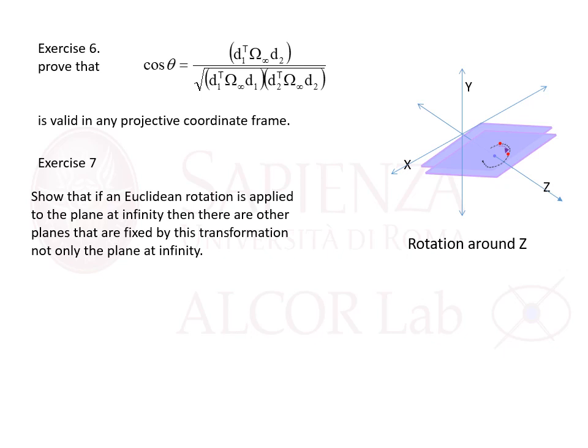To conclude: we have proved that the equation for the absolute conic is valid in any projective coordinate frame — that is, also in a projective space and in an affine space — and we have seen that it is true in the Euclidean frame. As exercise 7, you should show that if a Euclidean rotation is applied to the plane at infinity, for example a rotation around the z-axis, then there are other planes that are fixed by this Euclidean rotation — not only the plane at infinity. Translation does not need to be considered. This should be proved.